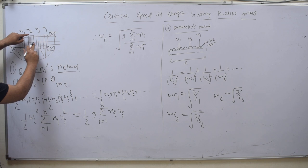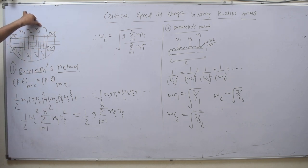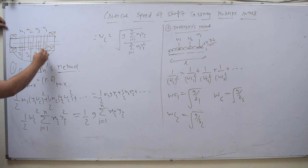There is rotor 1, rotor 2, rotor 3, rotor 4. Its mass M1, M2, M3 and M4. And this is the deflection - Y1, Y2, Y3, and Y4 are the deflections.